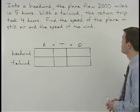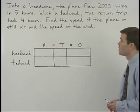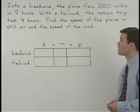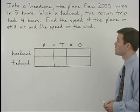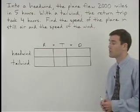Into a headwind, the plane flew 2,000 miles in five hours. With a tailwind, the return trip took four hours. Find the speed of the plane in still air and the speed of the wind.